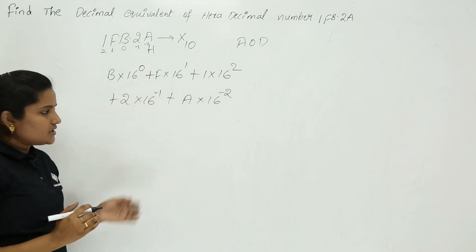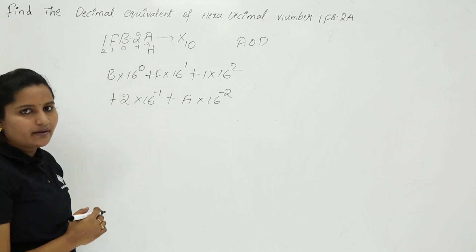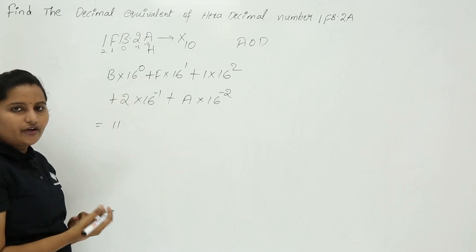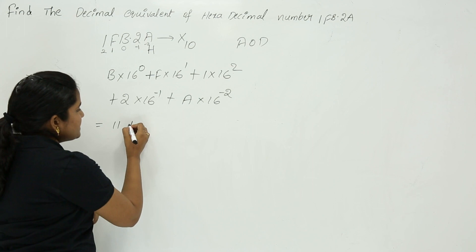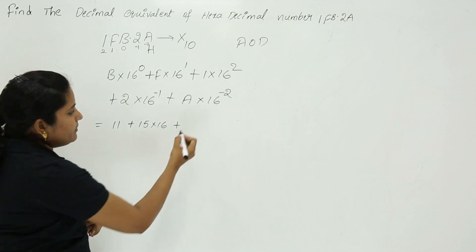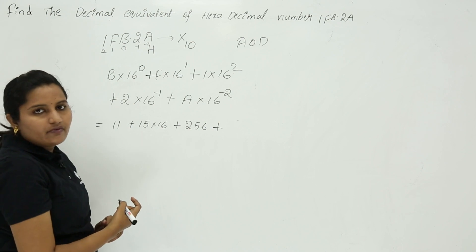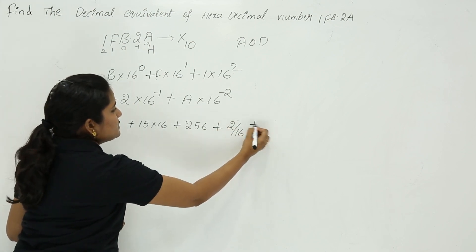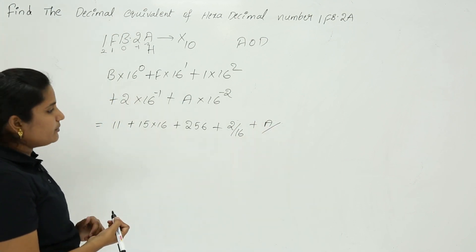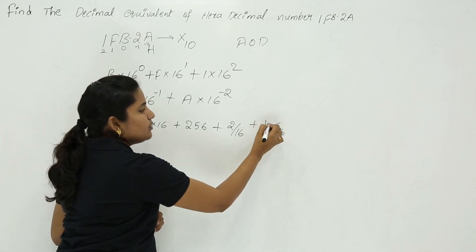After summing all these multiplications, you are going to get the equivalent decimal number. So here B means 11 into 16 power 0, which is 11 into 1, equals 11. Plus F means 15 into 16. Plus 16 square means 256. Plus 2 into 16 inverse, that means 2 by 16. Plus A into 16 square means A by 256. Here you can take A value as 10.